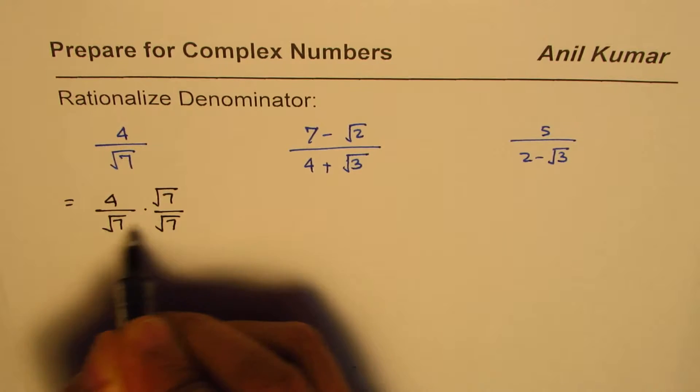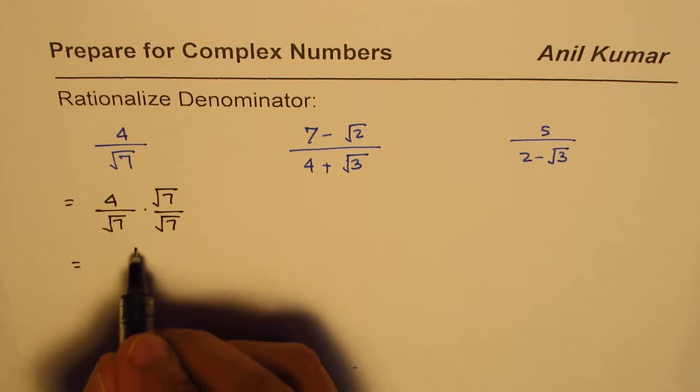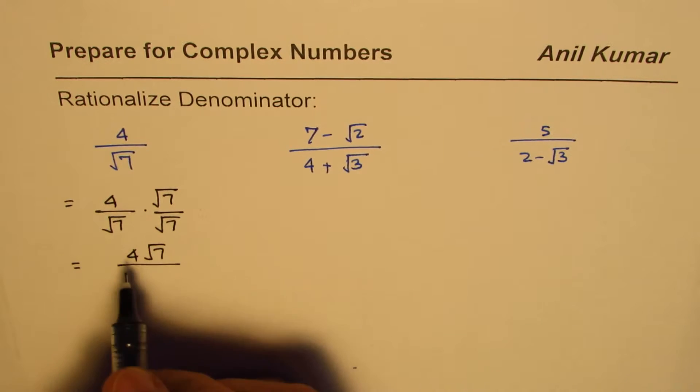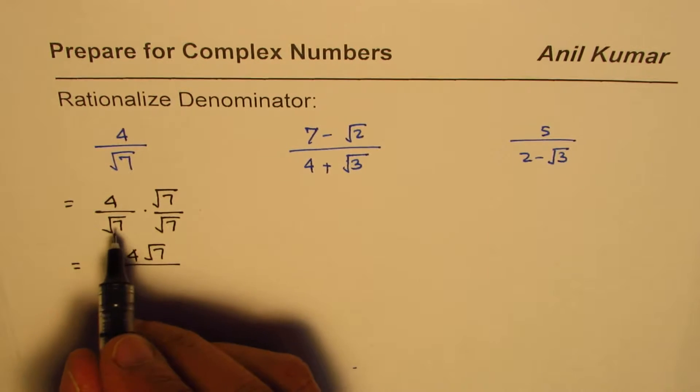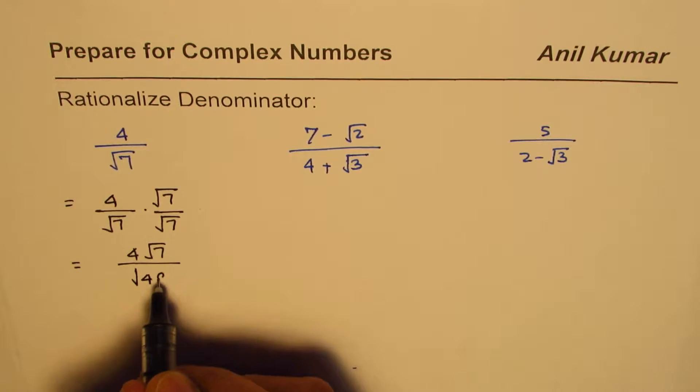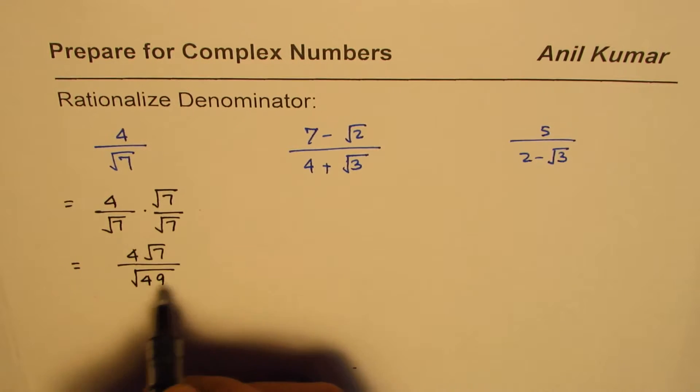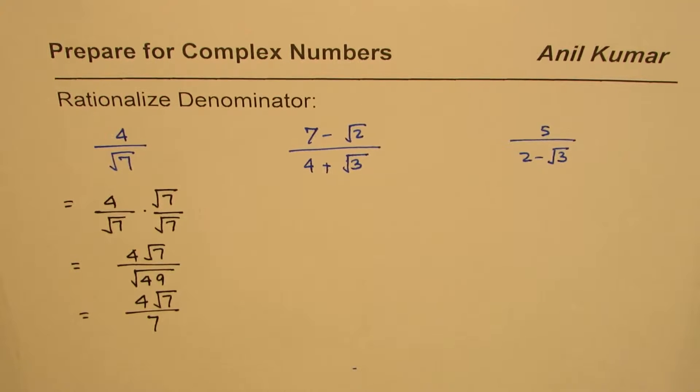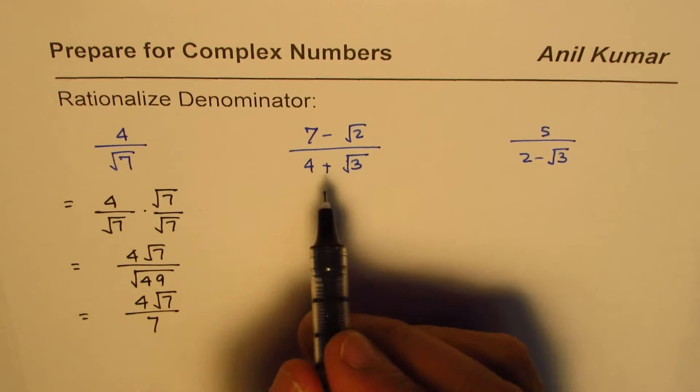We get 4 times square root 7 in the numerator. The denominator will be—you could write directly at this stage 7, or if you want, let's go one more step: square root 7 times square root 7 is 49... wait, is 7. And then you get 4 square root 7 over 7 as your solution. That is how you rationalize.